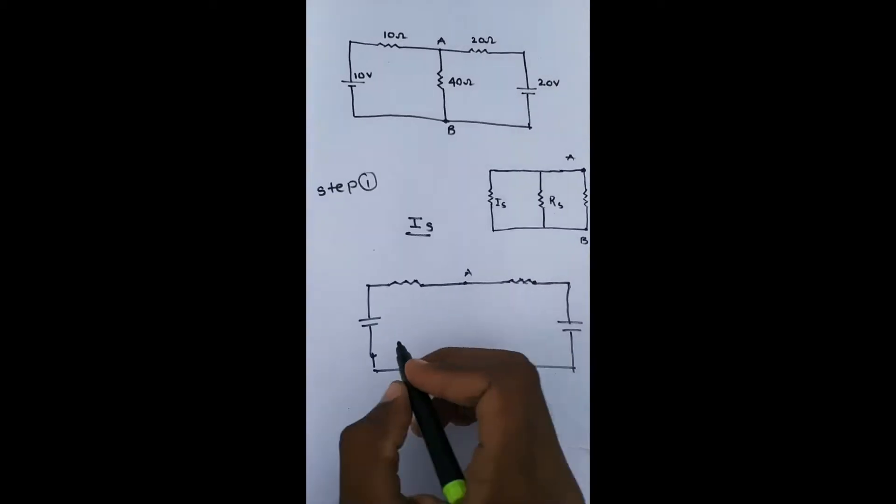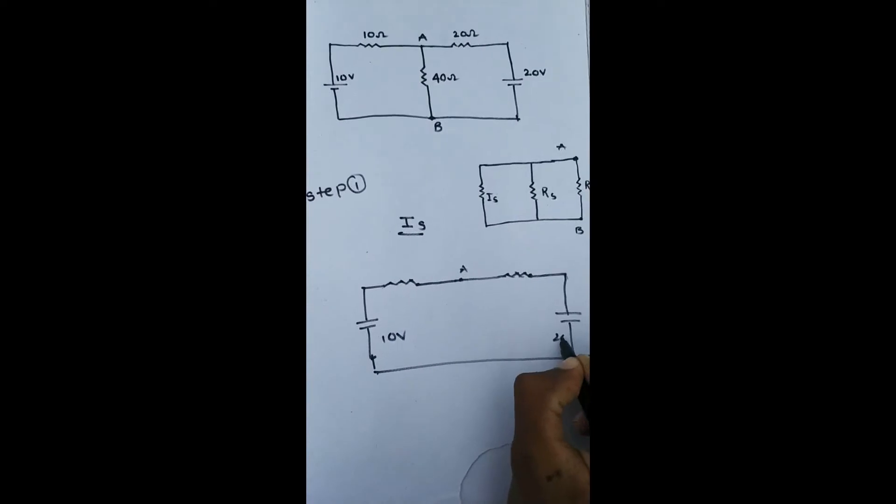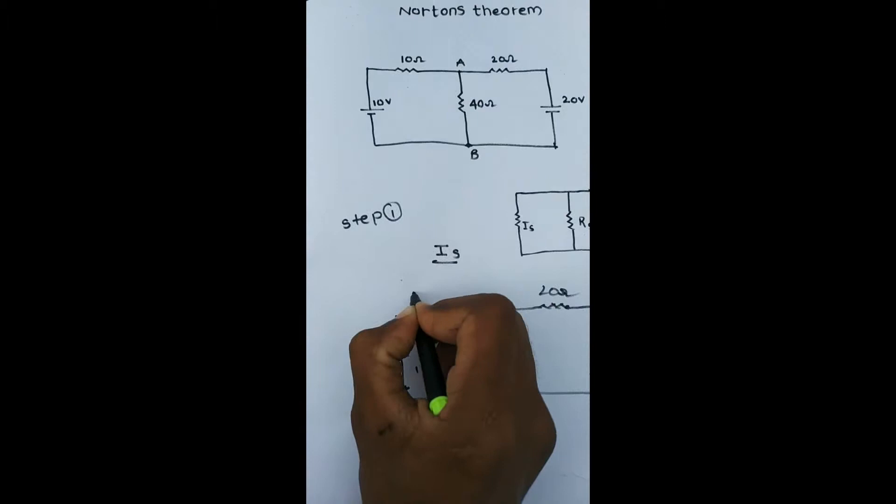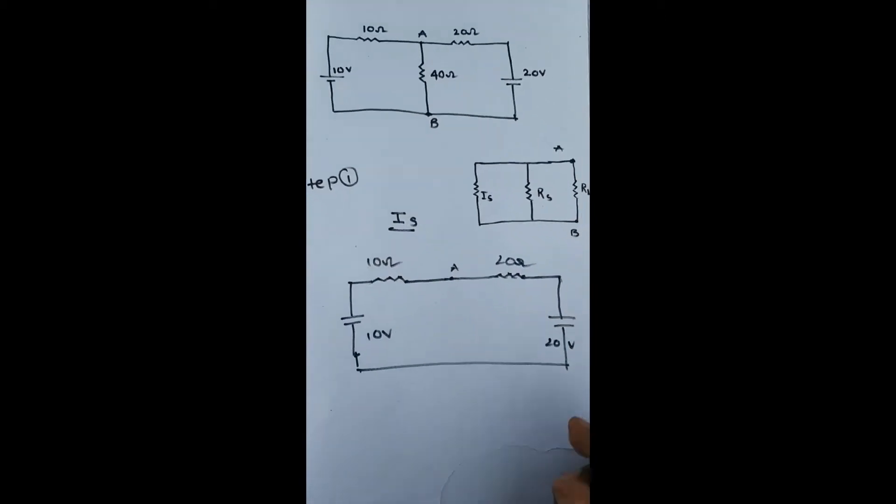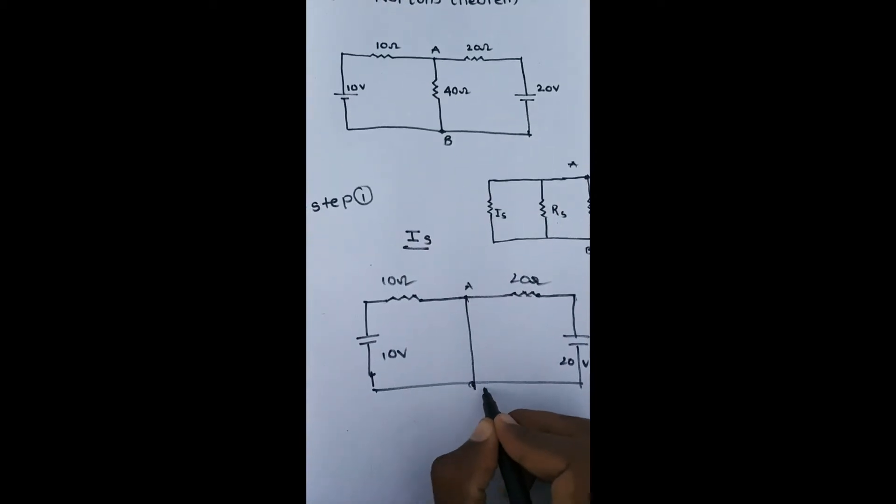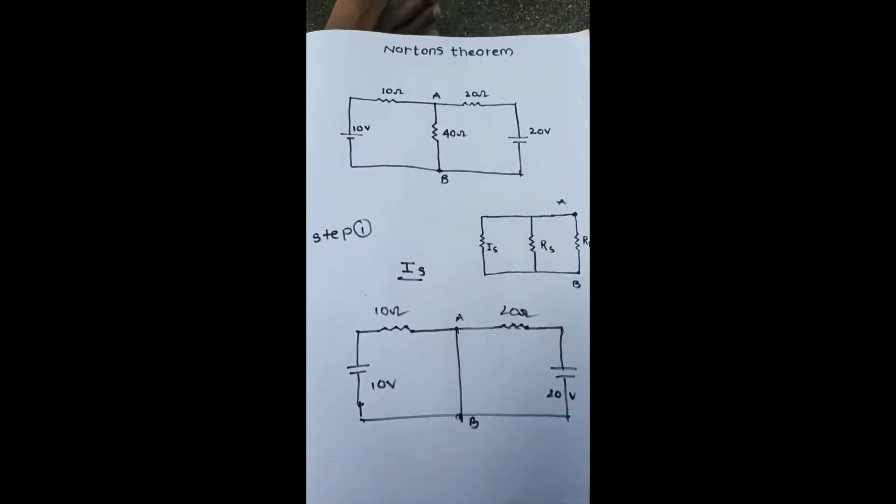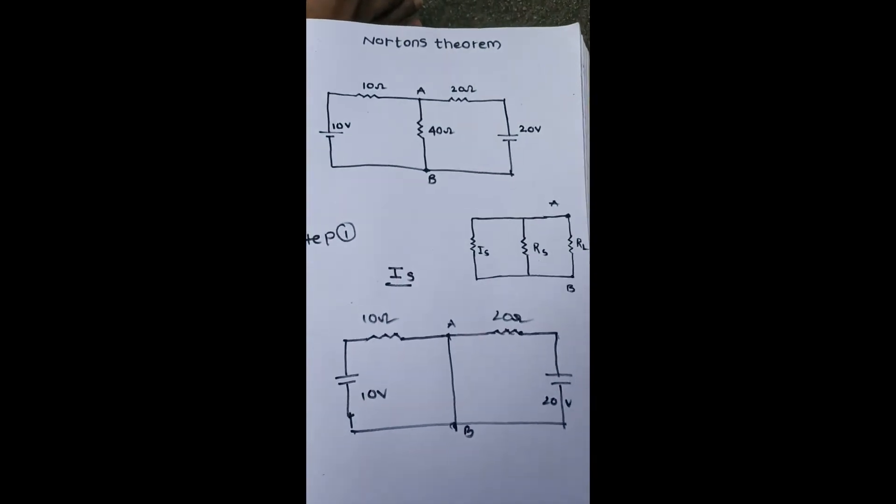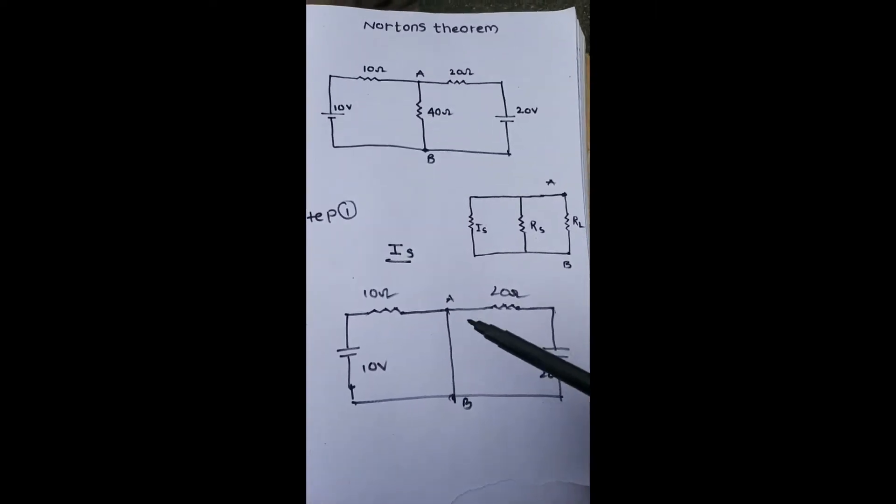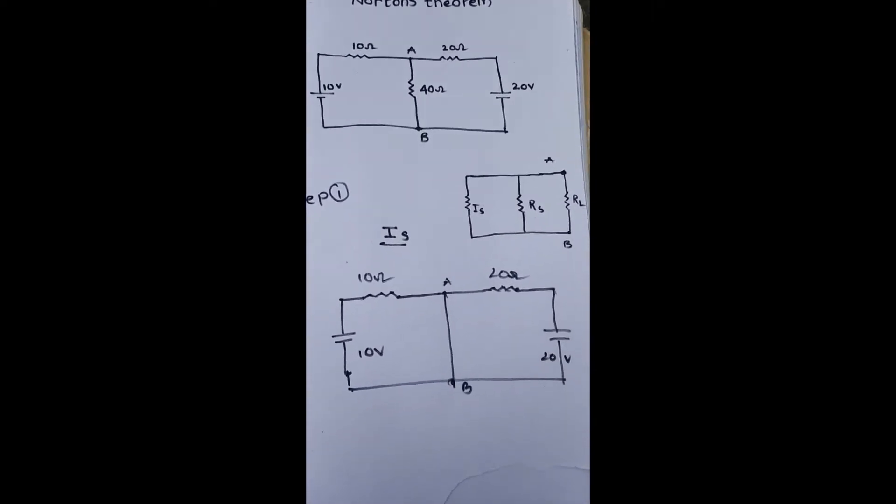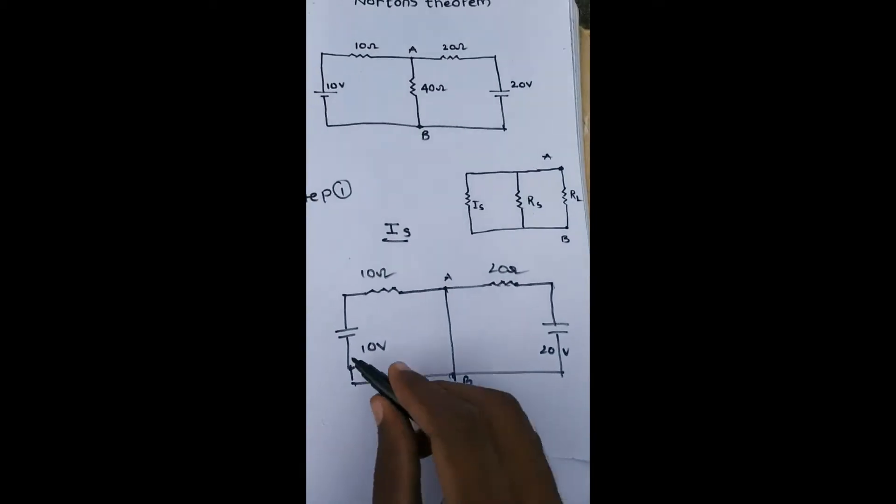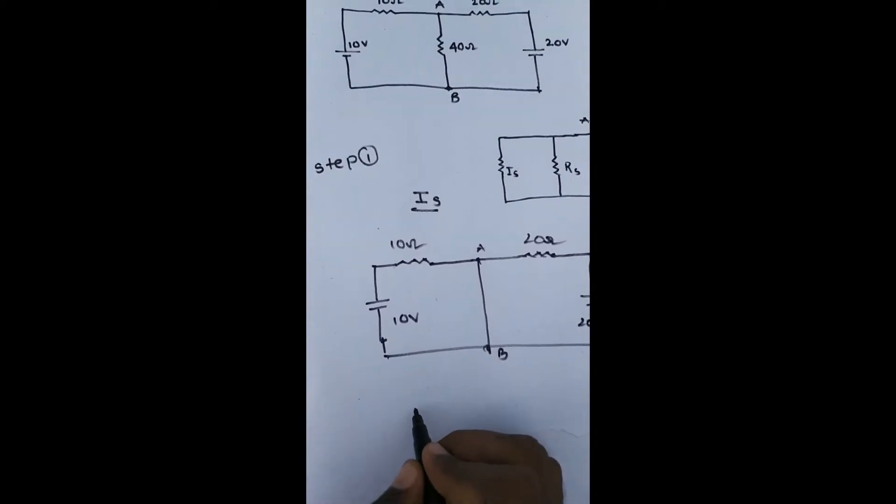This is the redrawn circuit: 10 volts, 20 volts, 20 ohms, 10 ohms. So by applying Kirchhoff's laws and mesh analysis, we need to find the current at AB points when short-circuited. Using Norton's theorem, we remove the RL value and short circuit AB. Now applying mesh analysis to find i1 value and i2 value.